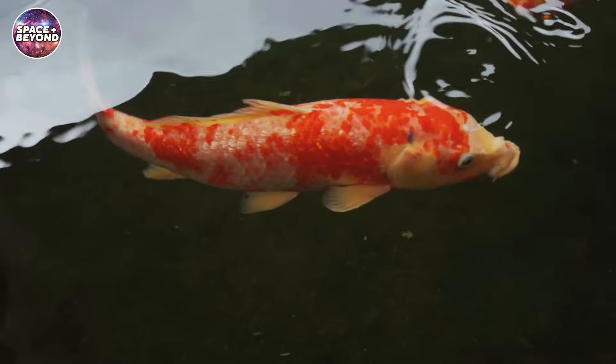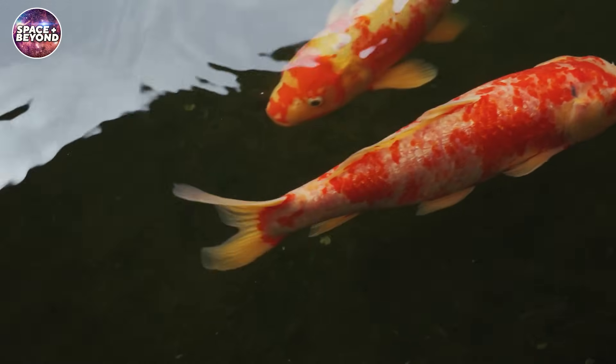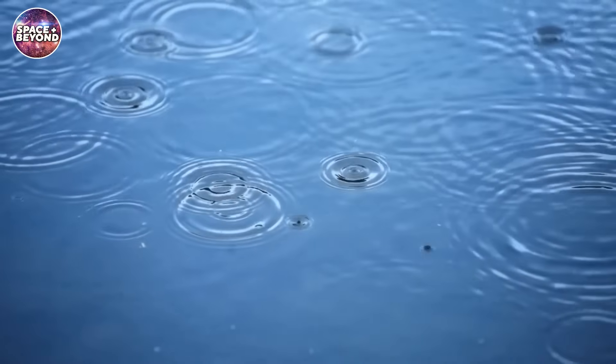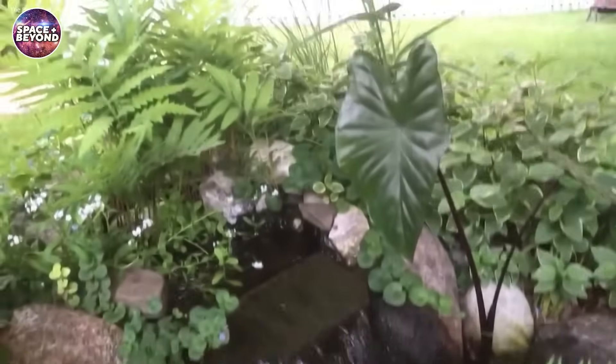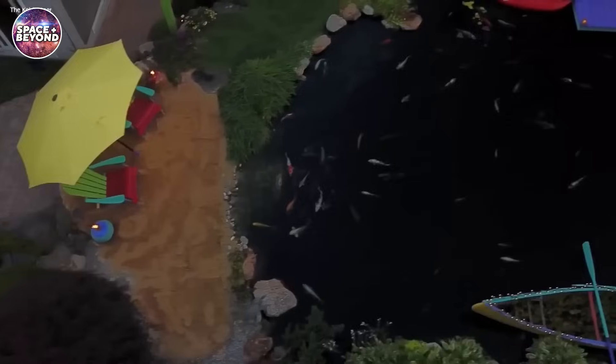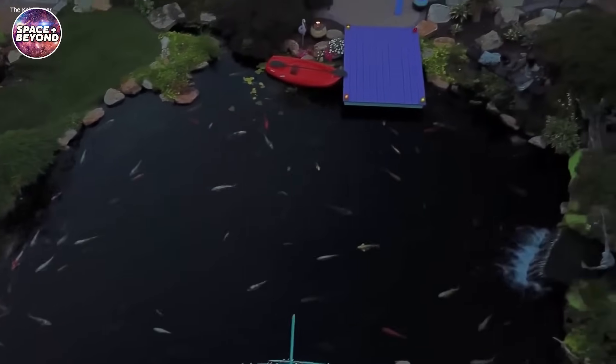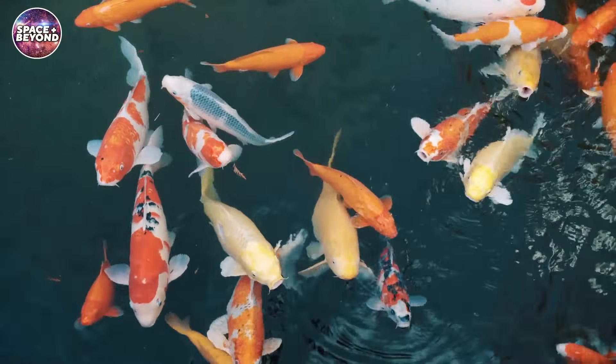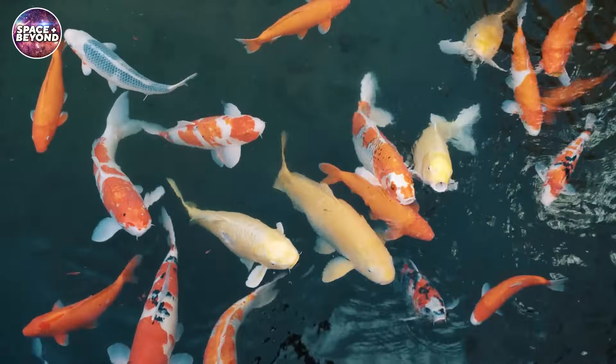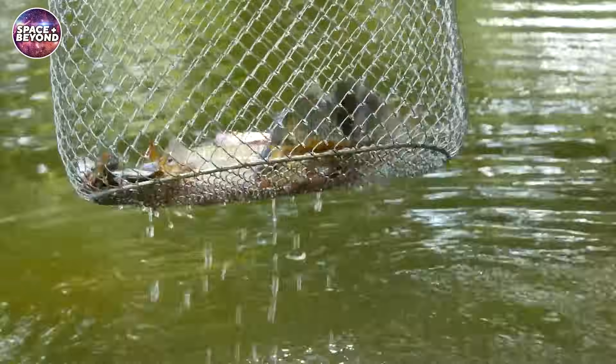But when it rains, they can observe ripples on the surface of the water, proving that there is indeed something beyond the surface. And although they can observe these ripples, they are still unable to go beyond the surface, as any fish that does manage to break the surface would be unable to survive.